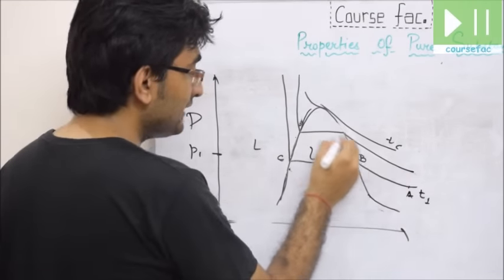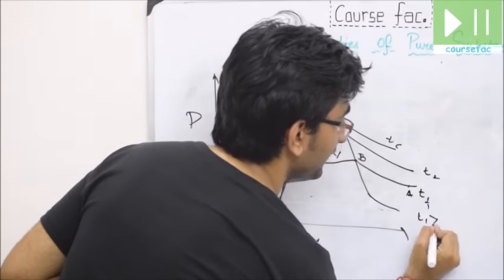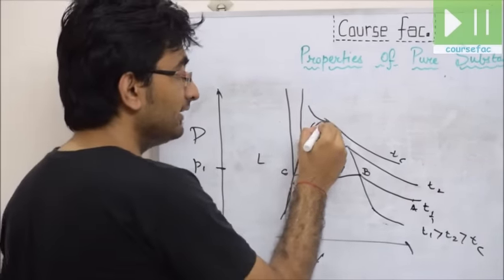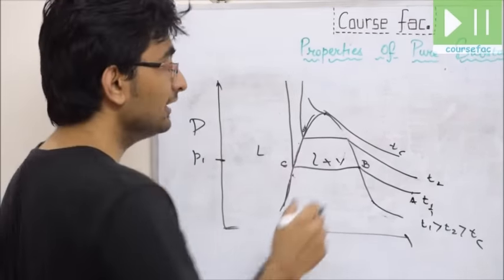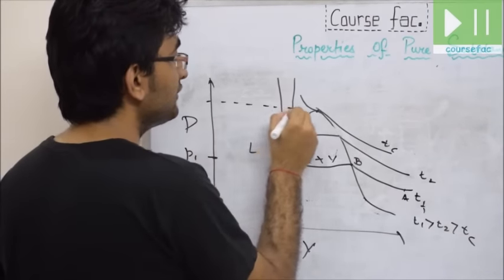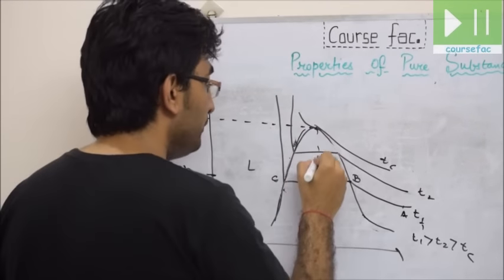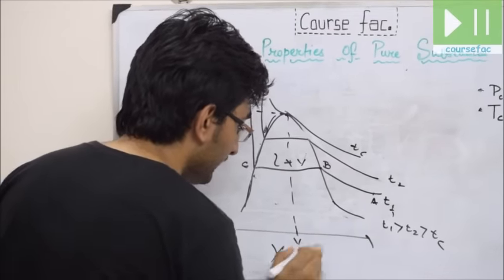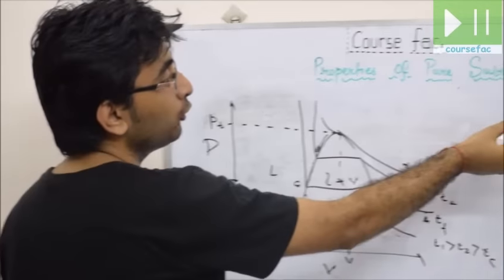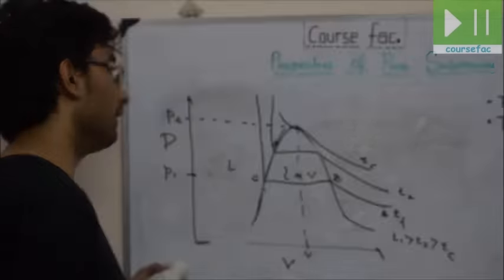As we increase temperature, we get isotherms at T1 and T2, where T1 > T2 > Tc. The isotherm passing through the critical point — where the liquid-vapor transition zone equals zero — is the critical isotherm. The temperature at this point is the critical temperature, the pressure is the critical pressure, and the volume is the critical volume. For water, critical pressure is 225.65 bar and critical temperature is 374.15°C.